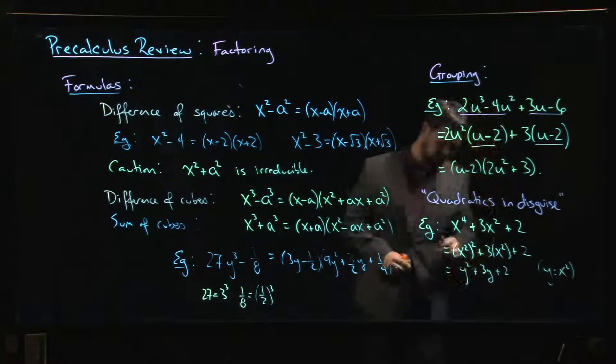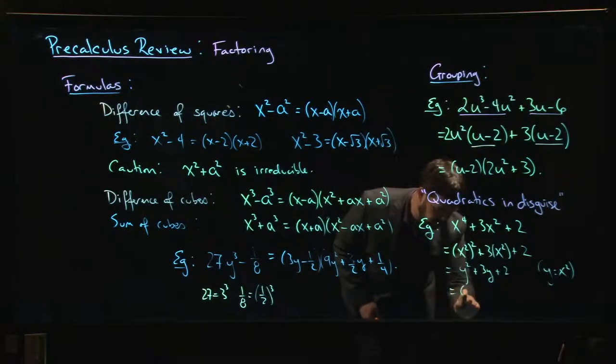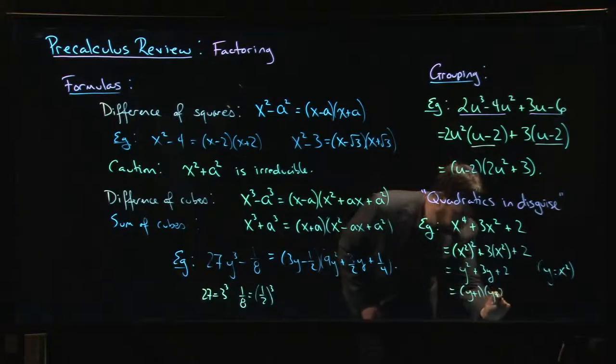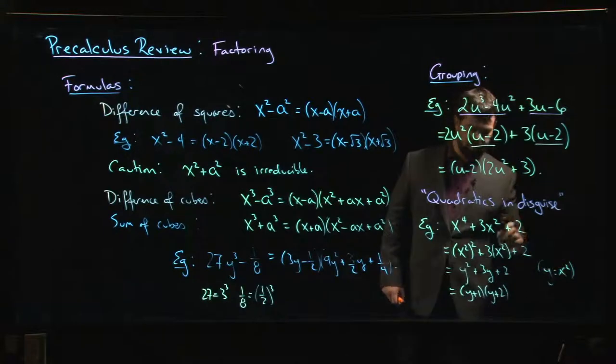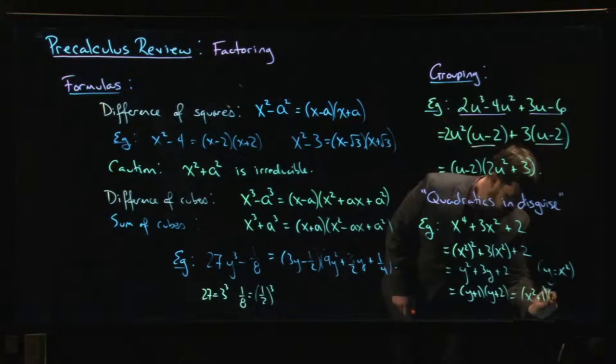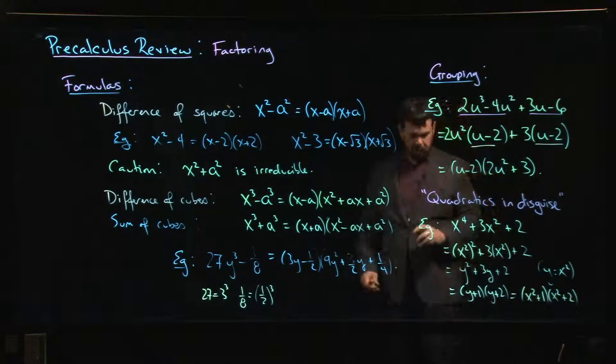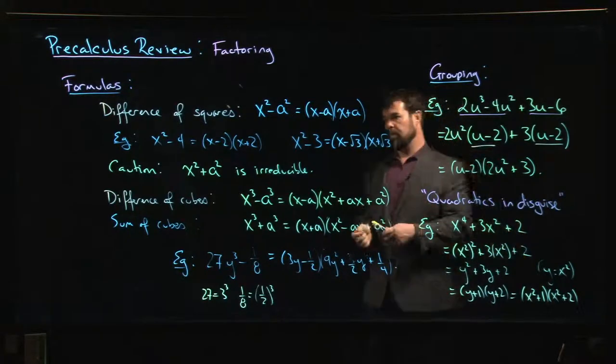And we know how to factor this, this is going to be y plus 1 times y plus 2. Ah but we should end in the variable we started with, x squared plus 1 times x squared plus 2. All right and because those are both sums of squares you can't factor any further, both of those are irreducible quadratics.